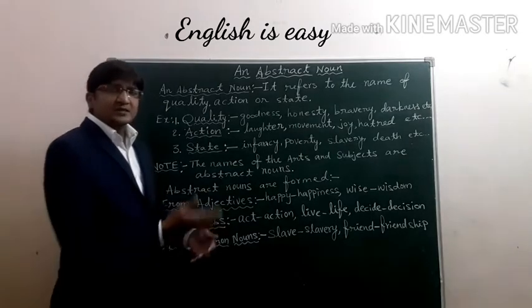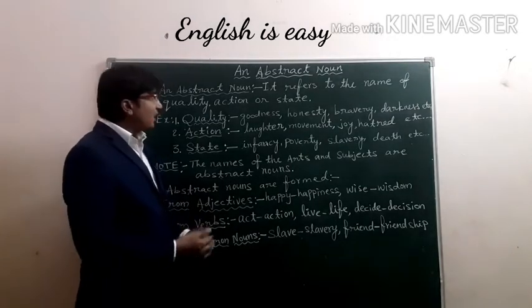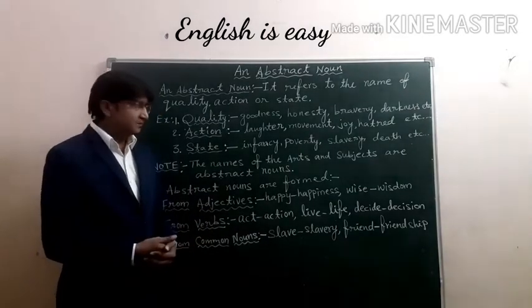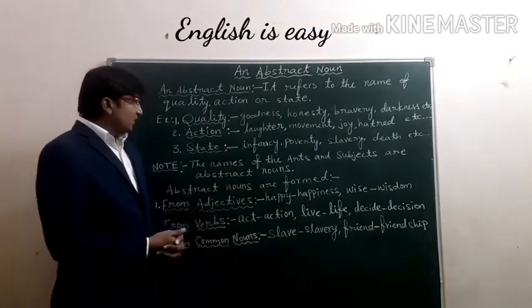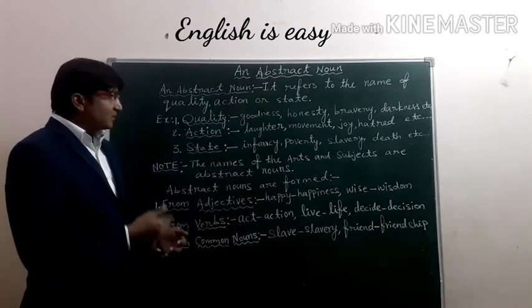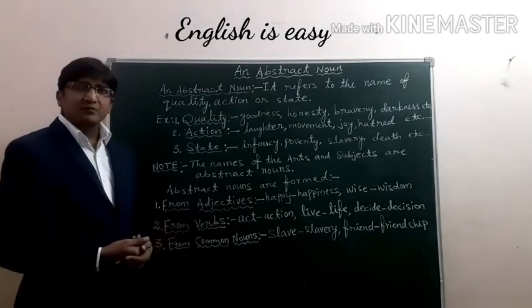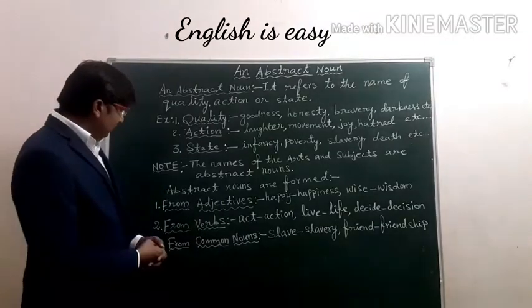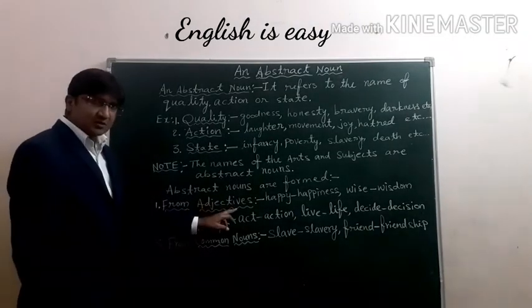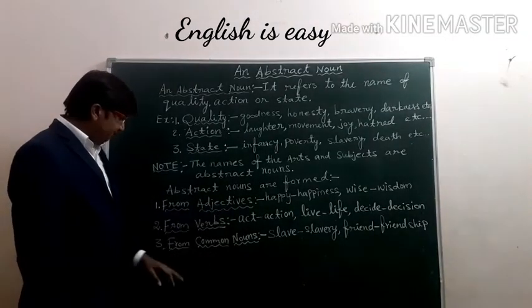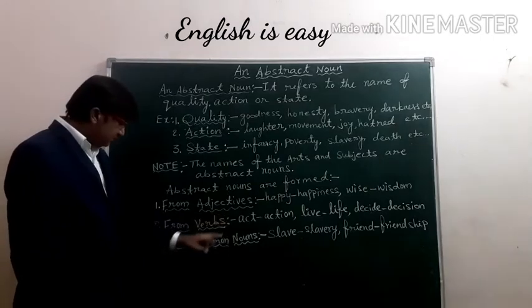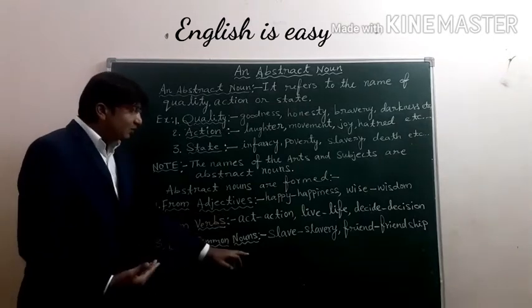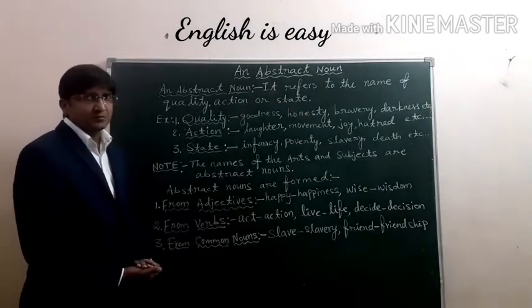Now let us try to understand how abstract nouns are formed. These abstract nouns are formed in three ways: from adjectives, from verbs, and even from common nouns.